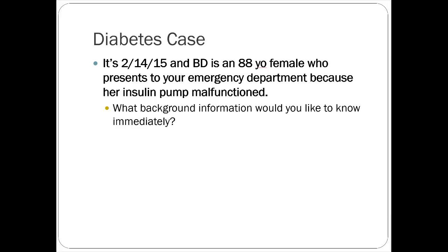So what do you want to know immediately if a patient comes in with an insulin pump malfunction? Blood sugar is the first thing — hers was actually fine, around 105. You'd also want to confirm whether she's Type 1 or Type 2 — she was Type 1. And then the question is: what do you actually do in a situation like this?